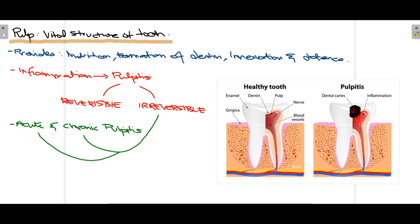As the name suggests, reversible pulpitis can be reversed and the pulp can be saved. But when a patient presents with irreversible pulpitis, as the name suggests, the pulp can no longer be saved because the damage is done beyond repair. In that case, root canal therapy is performed in order to save the tooth.